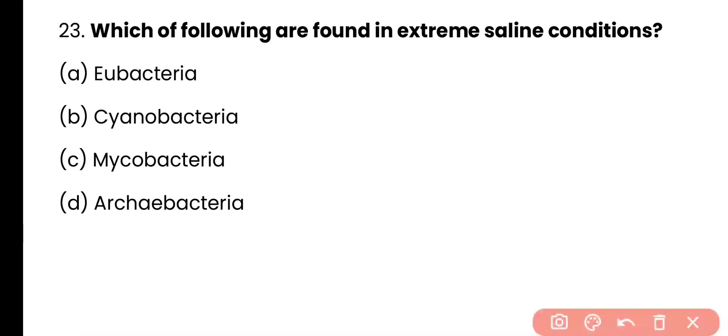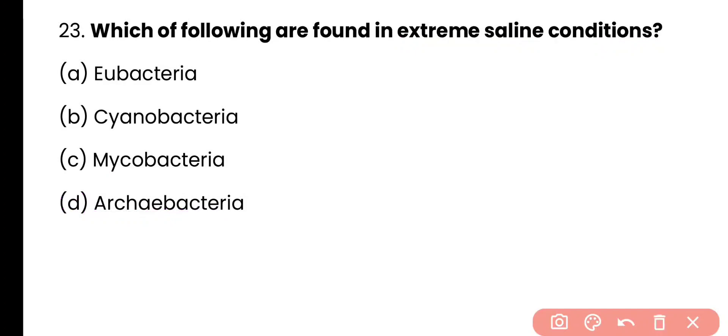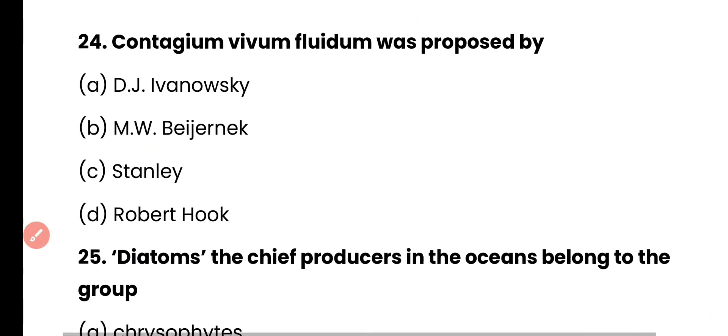Question number 23. Which of the following are found in extreme saline conditions? Eubacteria, cyanobacteria, mycobacteria, or archaeobacteria? Correct answer is option D. Archaeobacteria are found in extreme saline conditions because they have branched lipids in their membrane which help them to survive in extreme conditions.